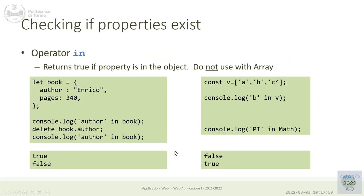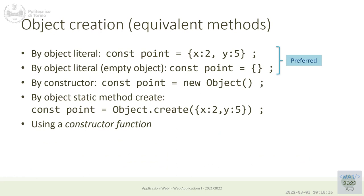To check whether an object has a property, you can use the 'in' operator: 'if ("author" in book)'. Or you can just access it and check if it's undefined: 'if (book.author === undefined)'. In the simpler case, you can just write 'if (book.author)' using the identifier notation.